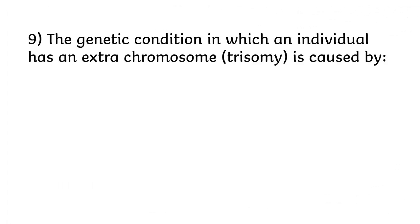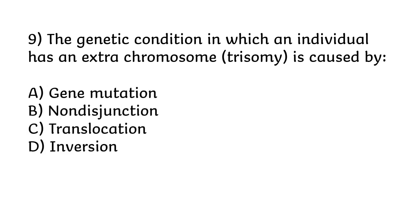The genetic condition in which an individual has an extra chromosome (trisomy) is caused by: gene mutation, non-disjunction, translocation, or inversion. The correct answer is option B, non-disjunction.